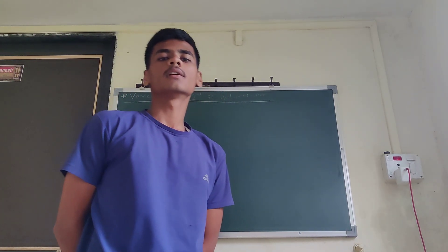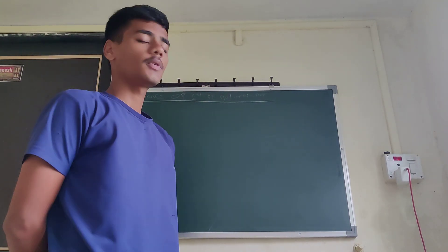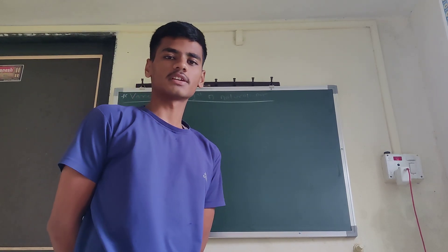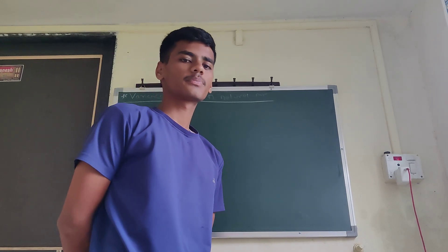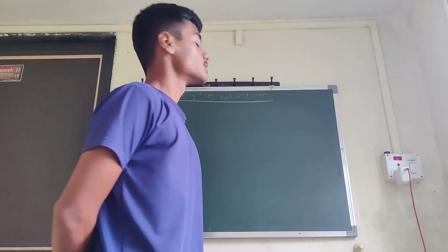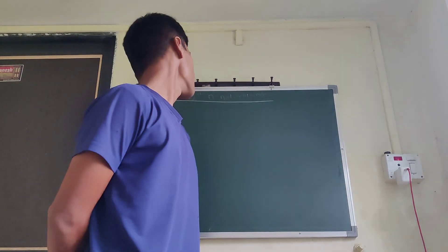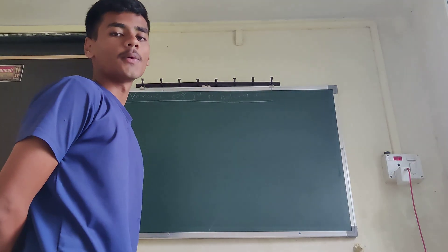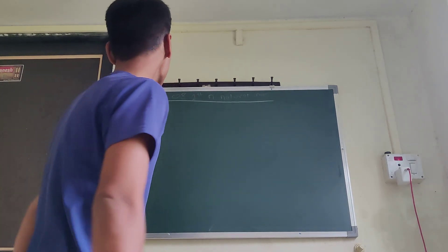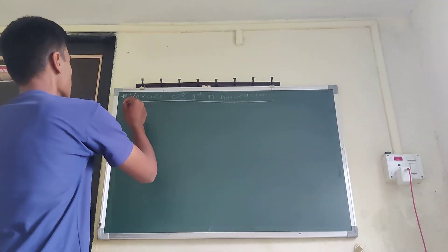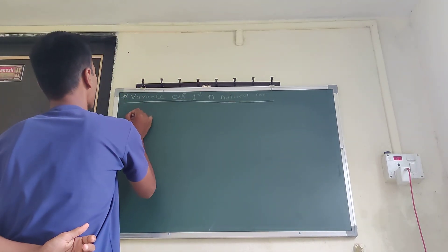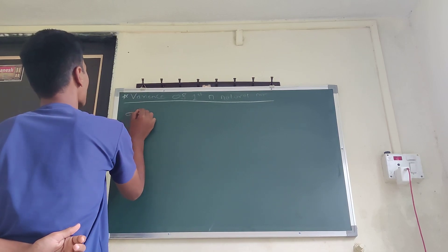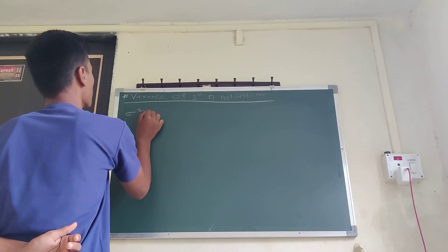In this video we are going to find the variance of the first n natural numbers. The variance formula is denoted as sigma squared.